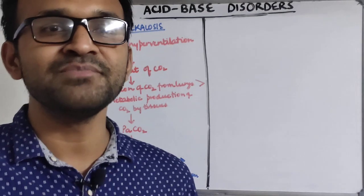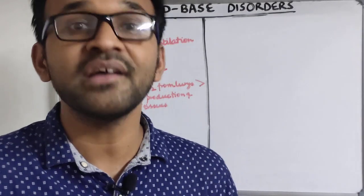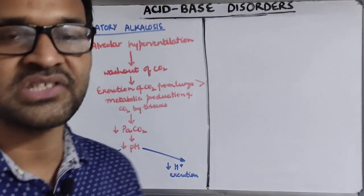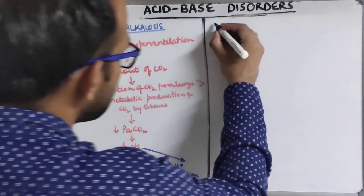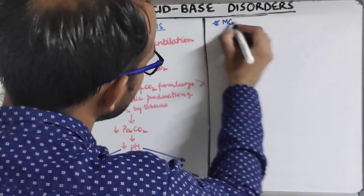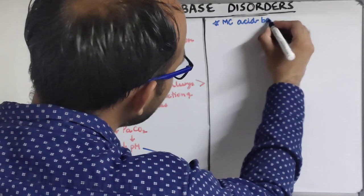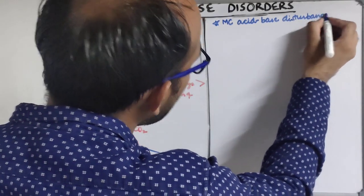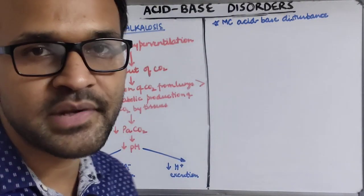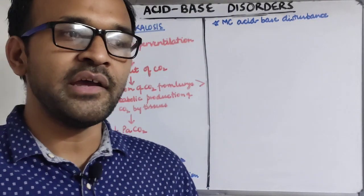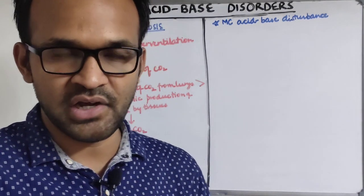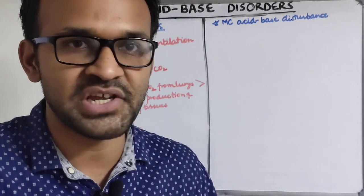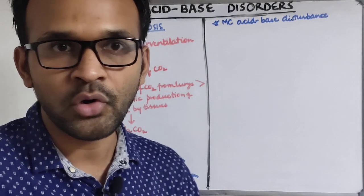An important point: respiratory alkalosis is the most common acid-base disturbance in critically ill patients. In nearly every cardiopulmonary disease, in early to mid stages, respiratory alkalosis is seen.